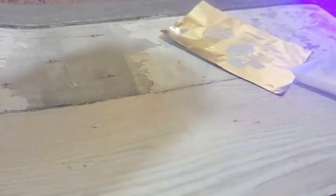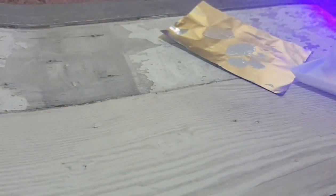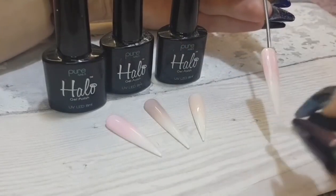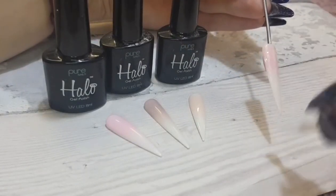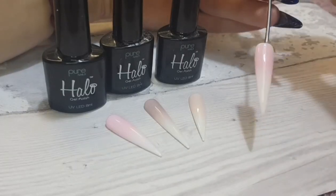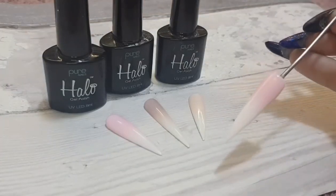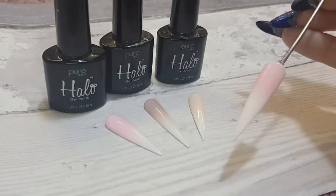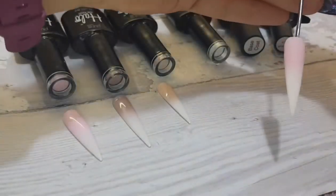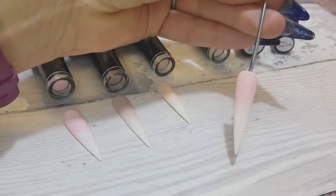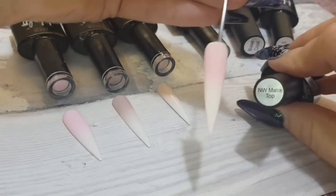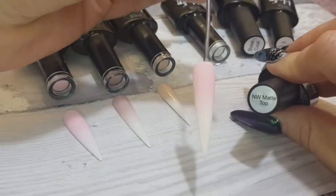Clean off your brush, and I'm going to show you some I made earlier. I'm just topcoating this nail in a matte, Halo's matte topcoat, just to show you the difference, because the ones I've done earlier have all got the nice high shine topcoat. So here it has come out of the lamp, all nice and matte.